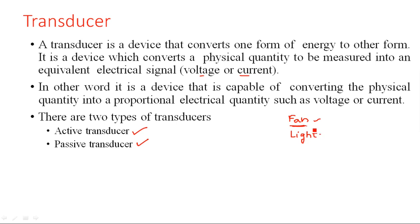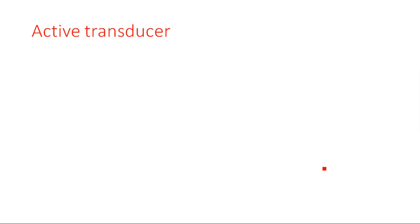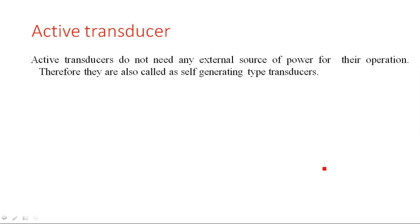Take light — every device we use daily comes under a transducer. Light is a transducer because it converts electrical energy into optical energy, that is, light energy. Take a motor — it also converts electrical energy into mechanical energy. A generator converts mechanical energy into electrical energy. Any equipment which converts any type of energy from one form to another form is a transducer.